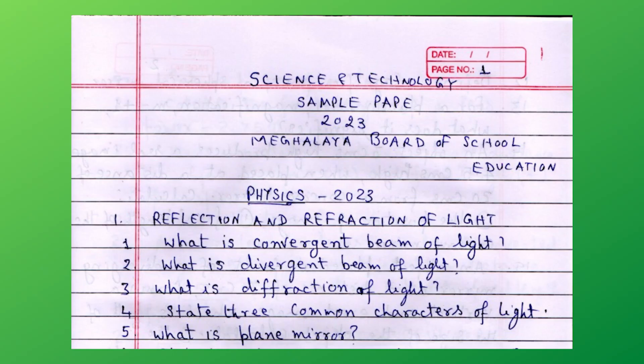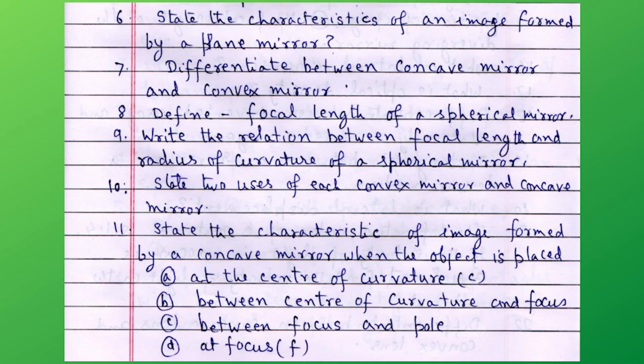Let's go to reflection of light. What is the convergent beam of light? What is divergent beam of light? What is diffraction of light? State the three common characteristics of light. What is a plane mirror? State the characteristics of an image formed by a plane mirror. Differentiate between the concave mirror and convex mirror. Define focal length of a spherical mirror. Write the relation between the focal length and radius of curvature of a spherical mirror. State the two uses each of convex mirror and concave mirror.